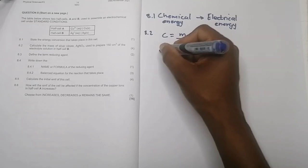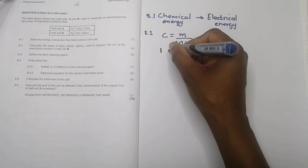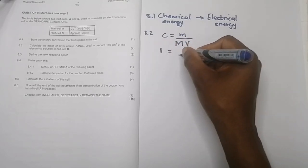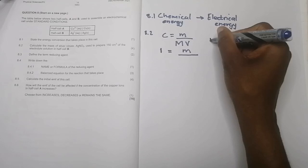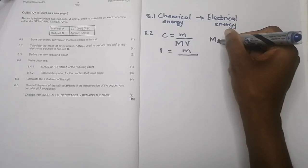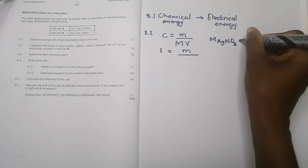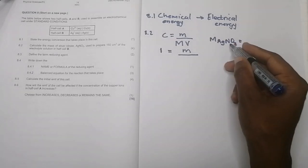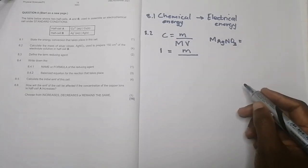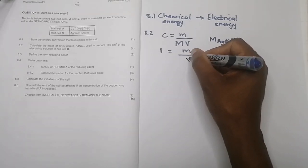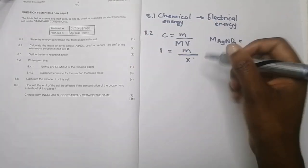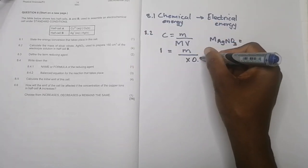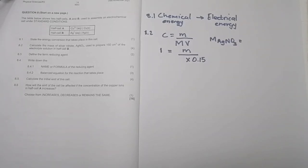The concentration of the electrolyte is one mole per cubic decimetre. We need to find the mass, and we'll look up the molar mass from the periodic table — silver, nitrogen, and oxygen. The volume is 150 cubic centimeters, which we divide by 1000 to get 0.15 dm³.